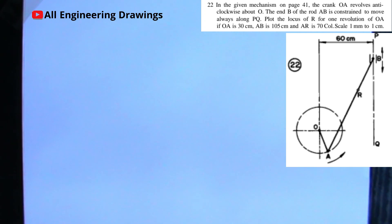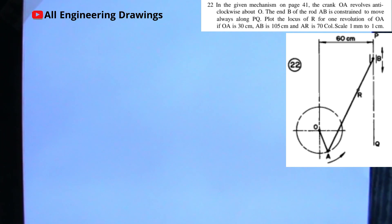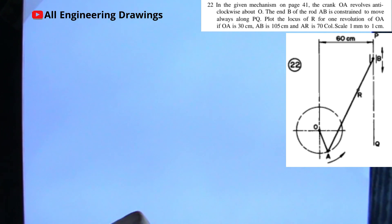Good day and welcome to this video. In this video I'll be showing you how to draw the mechanism loci problem. The question says: in the given mechanism on page 41, the crank OA revolves anti-clockwise about O. The end B of the rod AB is constrained to move always along PQ. Plot the locus of R for one revolution of OA. If OA is 30 cm, AB is 105 cm, and AR is 70 cm. Scale: 1 mm to 1 cm, so for every dimension in cm we use mm on our ruler.